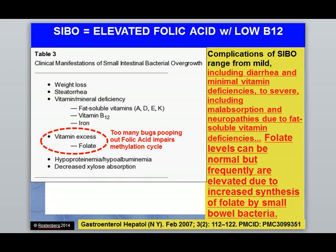I'm going to show this slide from last time. The reason SIBO is important for everyone — and for individuals working with methylation issues and balancing biochemistry — is shown right here. Table 3, taken from a study published in 2007: Manifestations of SIBO. Inability to gain weight, fatty stools, vitamin and mineral deficiencies — vitamins A, D, E, and K — clotting disorders, immunodeficiency, thyroid, infertility. B12, iron, anemia, and excess folate. Too many bugs producing folic acid will mess up the methylation cycle. That's why SIBO is important, and today we're going to talk about what causes it.